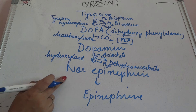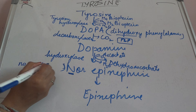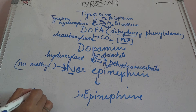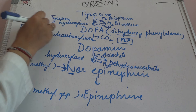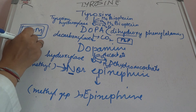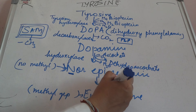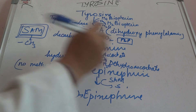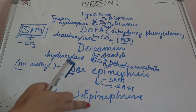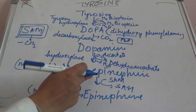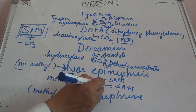Now coming to norepinephrine to epinephrine: the important point here is that N stands for 'no methyl group' — norepinephrine has no methyl group, but epinephrine has a methyl group. SAM (S-adenosyl methionine) is the one which gives its methyl group. So SAM is required in this reaction from norepinephrine to epinephrine. SAM donates its methyl group and forms S-adenosyl homocysteine, and finally we have the formation of epinephrine. Because there is a transfer of a methyl group, the enzyme is methyl transferase.